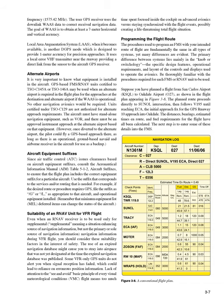Suppose you have planned a flight from San Carlos Airport (KSQL) to Oakdale Airport (O27), as shown in the flight plan appearing in Figure 3-8. The planned route proceeds directly to Sunol Intersection, then follows V-195 until reaching ESA, the initial approach fix for the GPS Runway 10 approach into Oakdale. The distances, bearings, estimated times en route, and fuel requirements for the flight have all been calculated. The next step is to enter some of these details into the FMS.